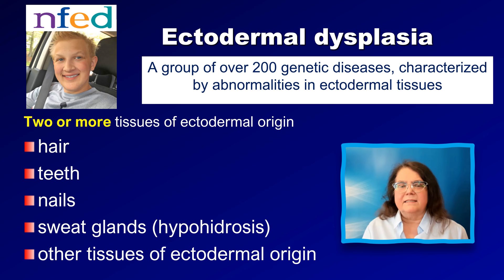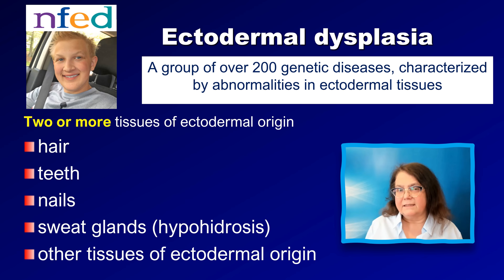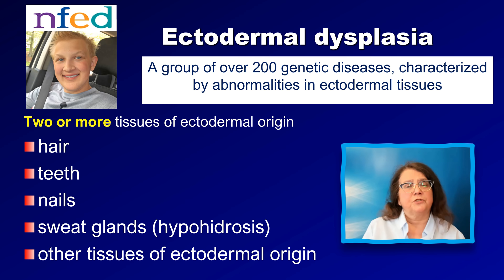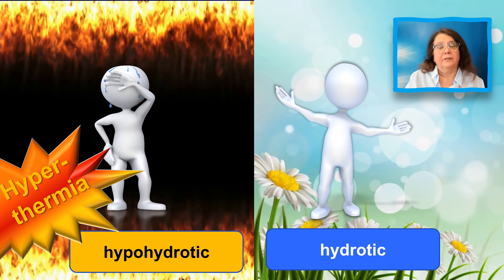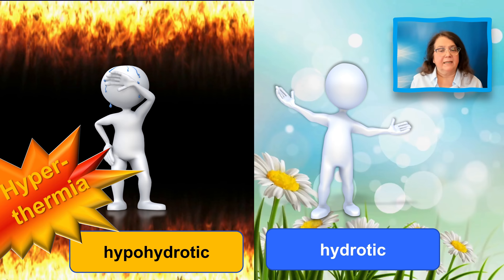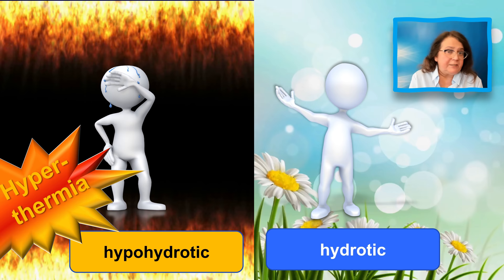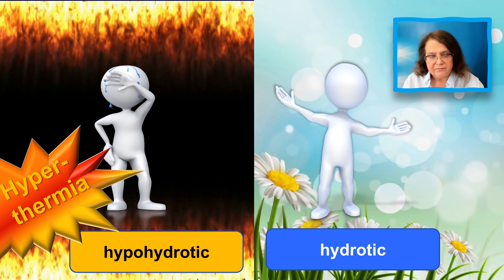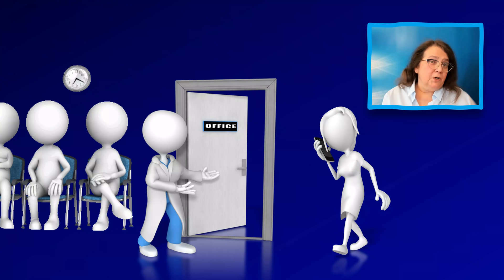As a reminder, ectodermal dysplasia is a group of more than 200 genetic diseases characterized by abnormalities in ectodermal tissues — most commonly the hair, teeth, nails, sometimes the sweat glands, and other tissues of ectodermal origin. There are two subgroups: the hypohidrotic type and the hidrotic type. The hypohidrotic type is associated with the inability to sweat, which may lead to hyperthermia — a life-threatening condition. So here, trichoscopy may identify a disease which is life-threatening, and it is important to have this knowledge to prevent the consequences of hyperthermia.